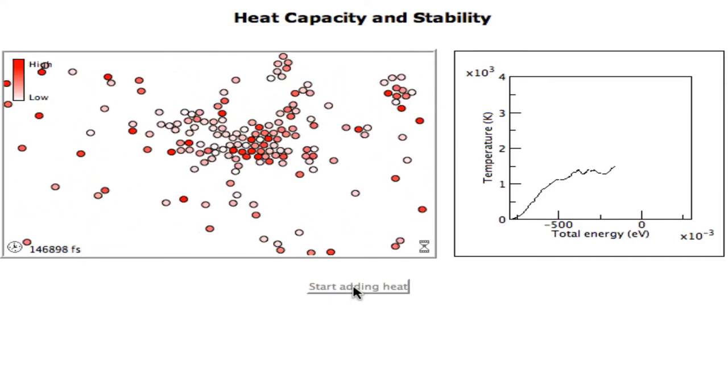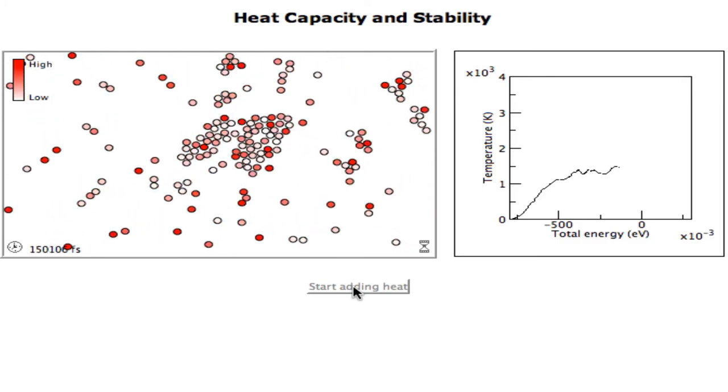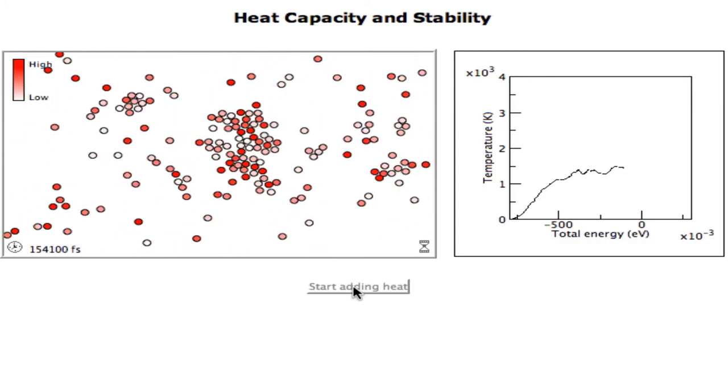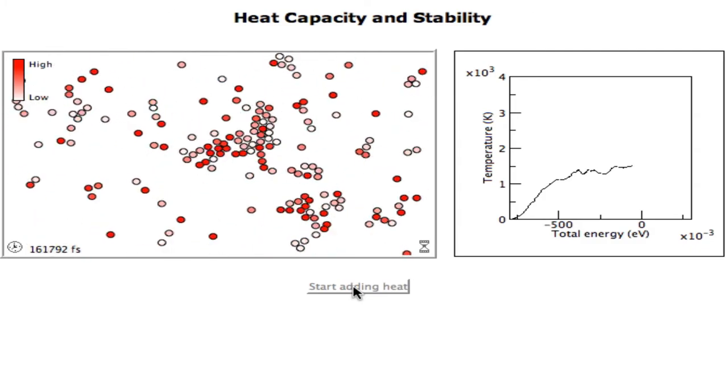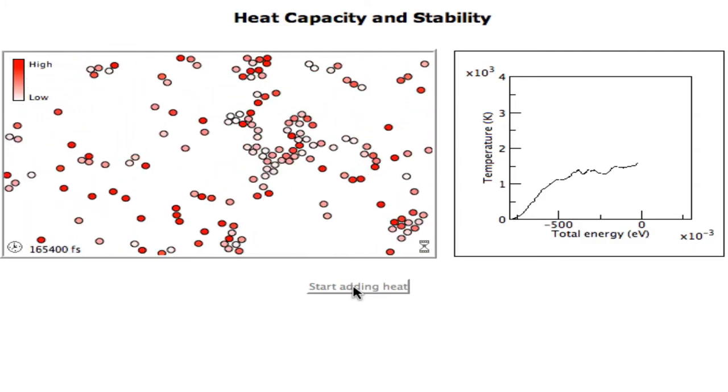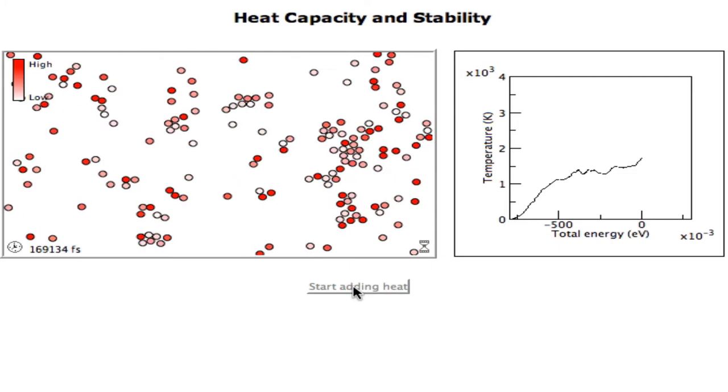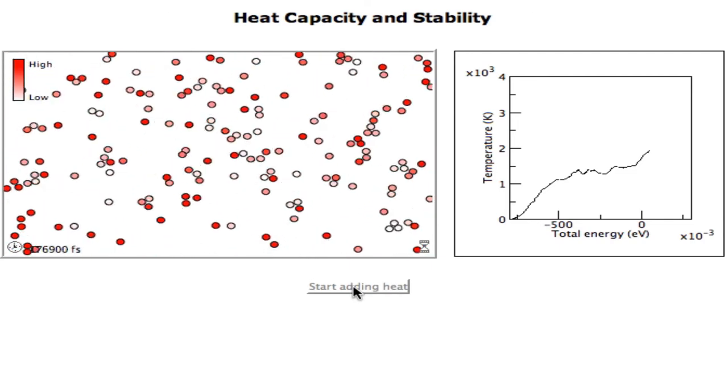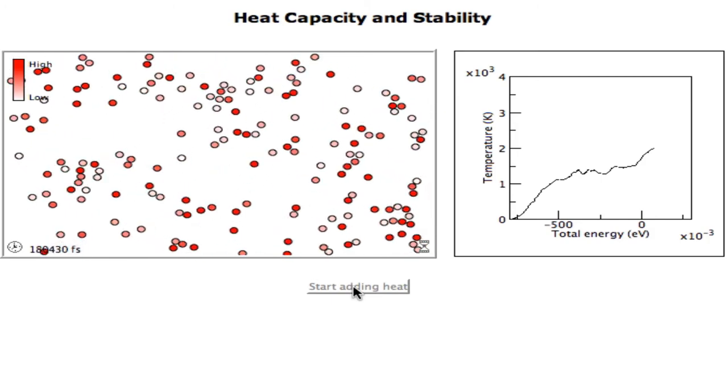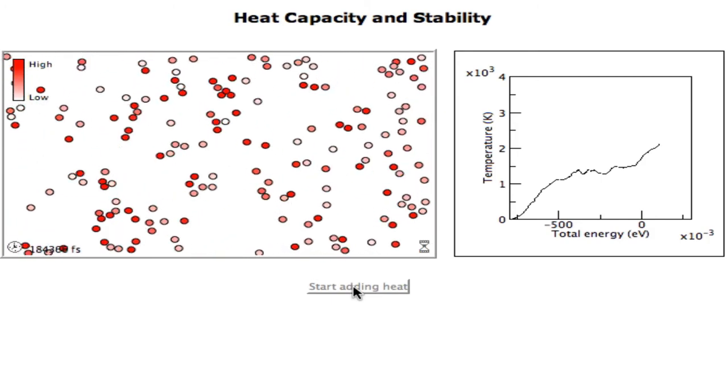Now most of the bonds are broken, and so now the heat that I add, again, is going into raising the temperature. So you can see the temperature now goes up and up. No more bonds are broken, so all the heat energy goes into kinetic energy or temperature again.